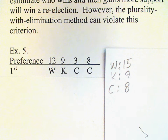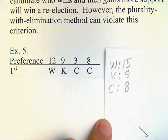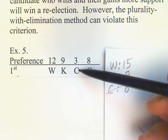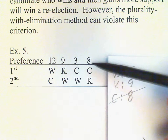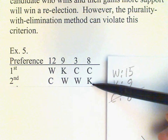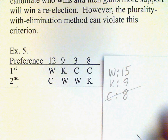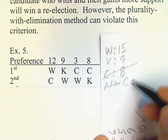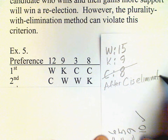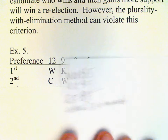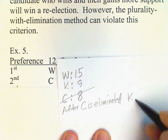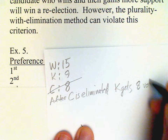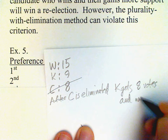Again, nobody has a majority, so the candidate with the lowest vote total is eliminated — that means C goes out. Now we look at those 8 votes that went to C, and K gets those votes. So after C is eliminated, K gets 8 more votes and wins. W gained more support but lost — the monotonicity criterion is violated.